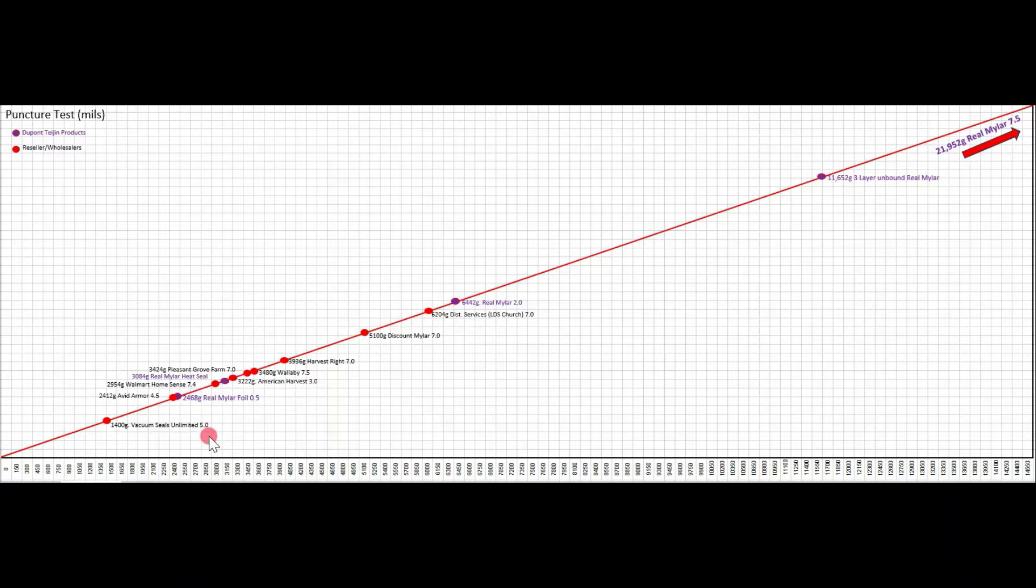But one thing you have to take into account is I also have here the mil size of the materials. Vacuum Sealers Unlimited is only 5 mil. Avid Armor here is 4.5. Discount Mylar is 7. And so, when comparing the data, just remember the mil size.